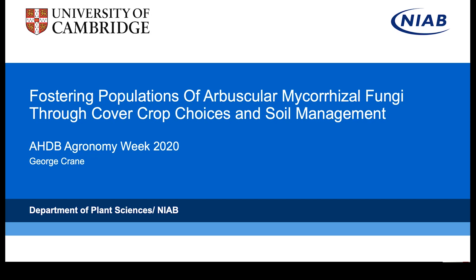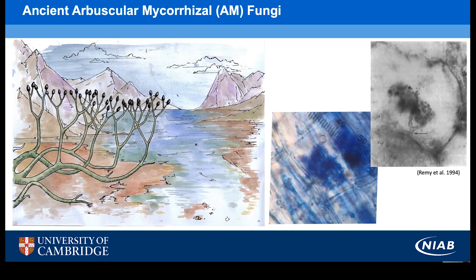My project looks at the impact of cover cropping and other farm practices on populations of arbuscular mycorrhizal fungi and how the interplay of these impacts crop growth and yield. Arbuscular mycorrhizal fungi are ancient obligate root symbionts of land plants, linked to the colonisation of the land in the early Devonian by plants such as Aglaophyton Major, which depended on interactions with these filamentous fungi for acquisition of nutrients from the nutrient-poor soils of the time, in exchange for photosynthetically derived carbon.